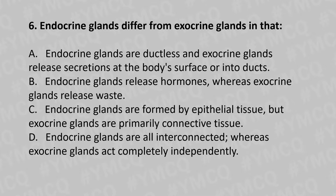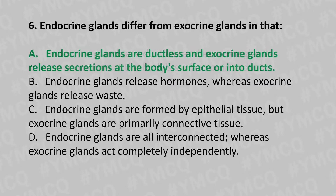Moving to our sixth question. Endocrine glands differ from exocrine glands in that: Option A: endocrine glands are ductless and exocrine glands release secretions at the body's surface or into ducts. Option B: endocrine glands release hormones whereas exocrine glands release waste. Option C: endocrine glands are formed by epithelial tissue but exocrine glands are primarily connective tissue. Option D: endocrine glands are interconnected whereas exocrine glands are completely independent. And the answer is Option A: endocrine glands are ductless and exocrine glands release secretions at the body surface or into ducts.